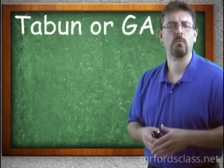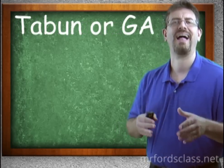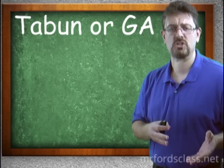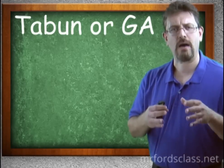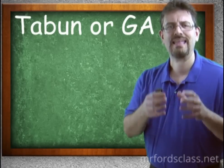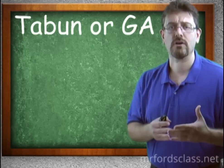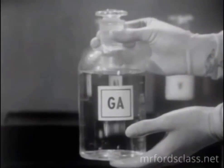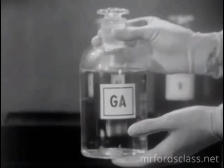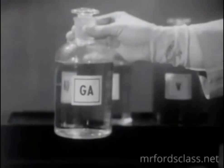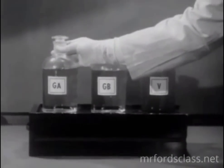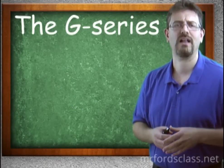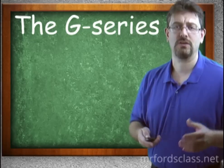Tabun, or GA, was the very first nerve agent, discovered by accident back in 1936 by a German researcher who was looking for a new type of pesticide that would attack insects through their nervous system. What he discovered instead was the very first nerve agent. GA was the first to be developed. Unlike the others, it has a faint odor — something like fruity chewing gum — and would probably be encountered as a non-persistent vapor or aerosol. Following this discovery, a series of nerve agents similar to Tabun were developed, called the G-Series — G for German.